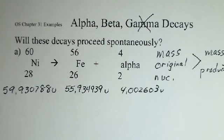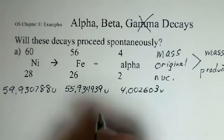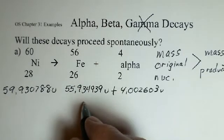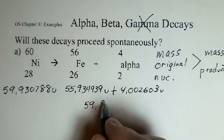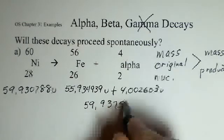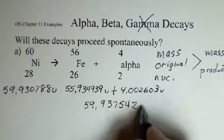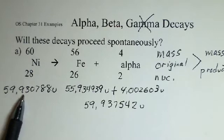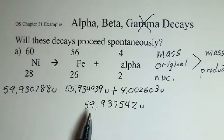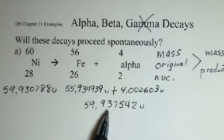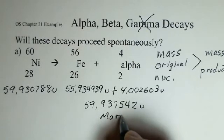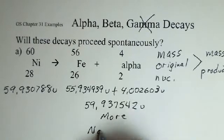So our task is to first add these two masses, the iron and the alpha, and doing that: 59.937542. And now inspect. The starting mass 59.930, ending mass 59.937. There's more mass here. This is not spontaneous.